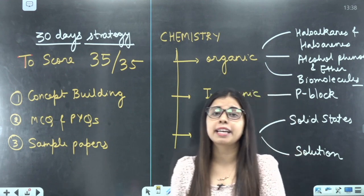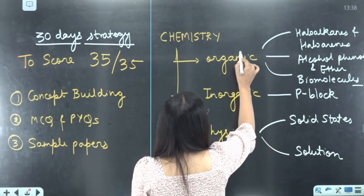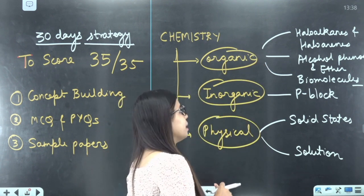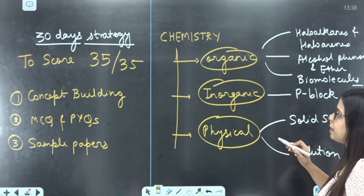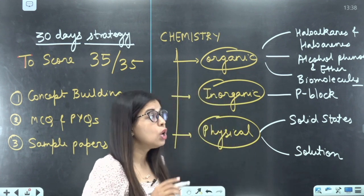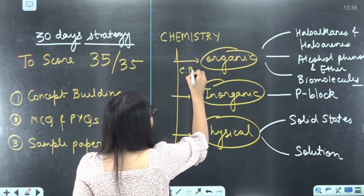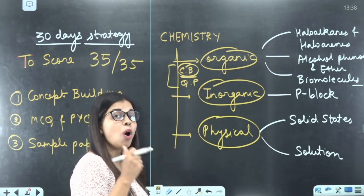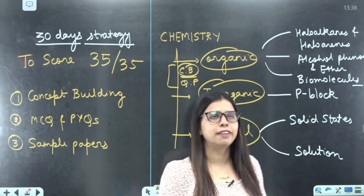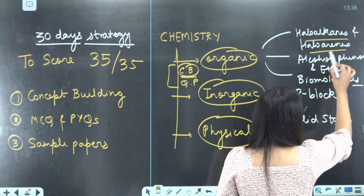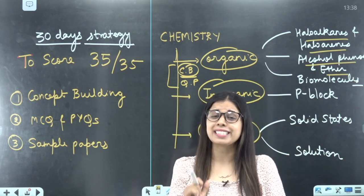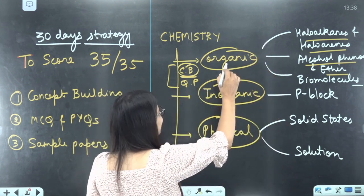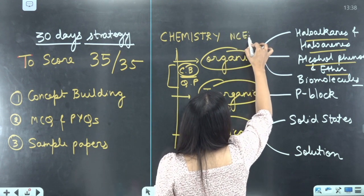First of all, we will focus on our chemistry syllabus. Our chemistry is divided into three segments: organic, inorganic, and physical. You have three chapters in organic. If I talk about difficulty level, in organic you have to do concept building and after concept building, you have to do more question practice. So it feels a bit tough for organic. These chapters are haloalkanes and haloarenes, and alcohol phenol and ether, which are very concept-based chapters.